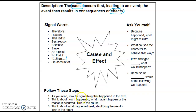As we read, we're going to look for something that happened in the text. We'll think about how it happened—what made it happen or the reason it happened. That's the cause. Then we'll think about what happened next and identify the result. That's the effect. So let's practice doing that.